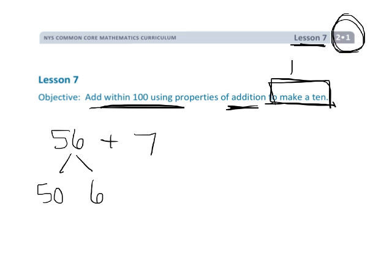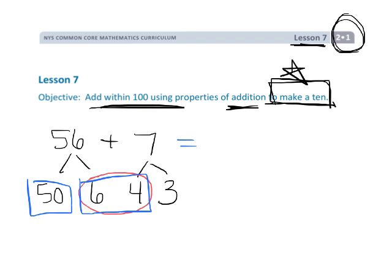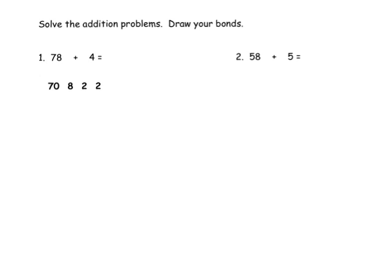Because we want to make a 10, we know we have 6, and we need four more. So we decompose our 7 as 4 plus 3. There's our 10. Now we have 50 plus another 10 is 60, so our final answer is 63 — because 60 plus 3 equals 63. That's the idea of this entire video.